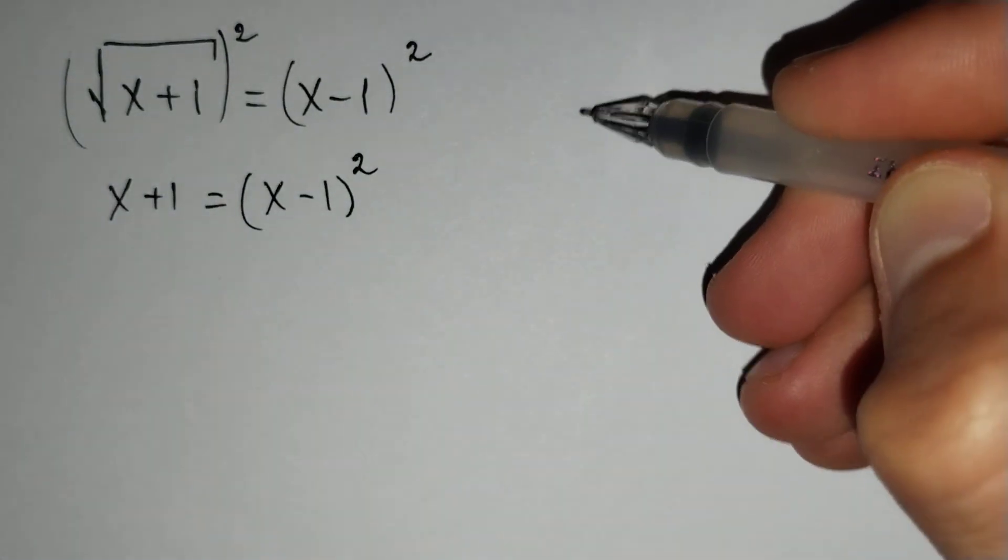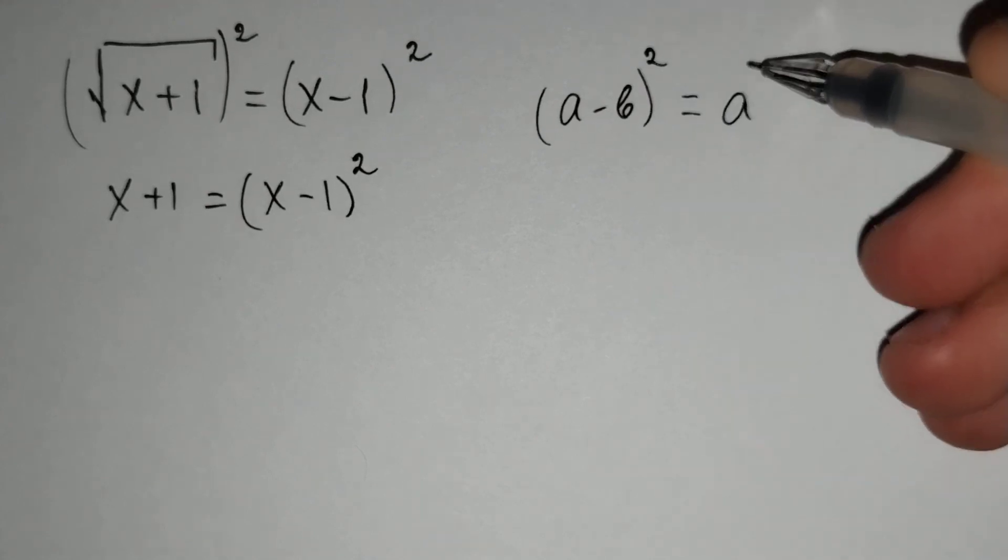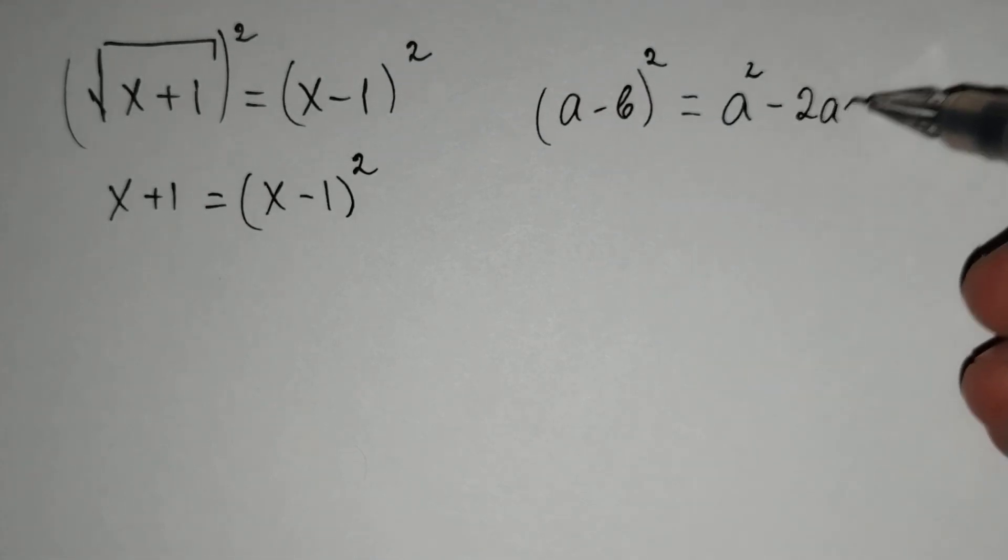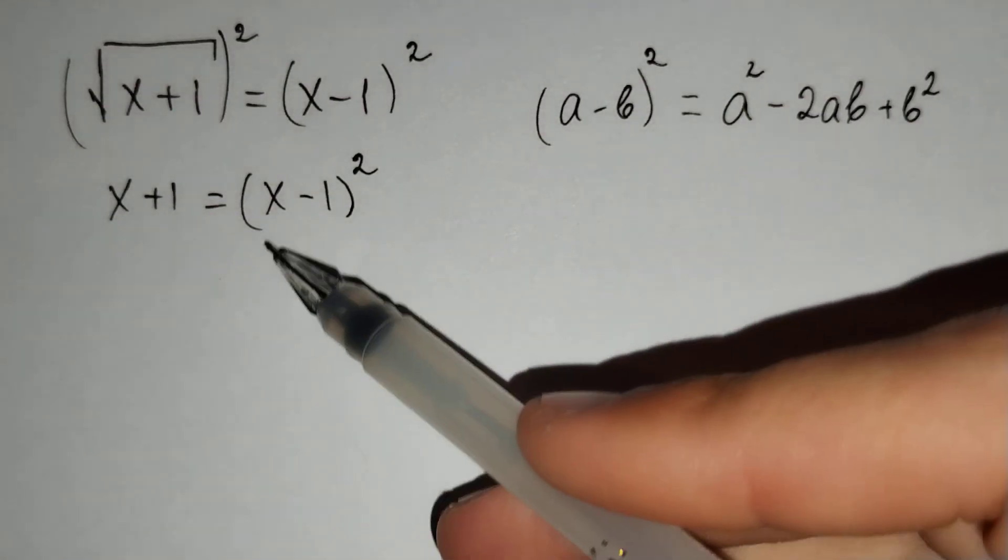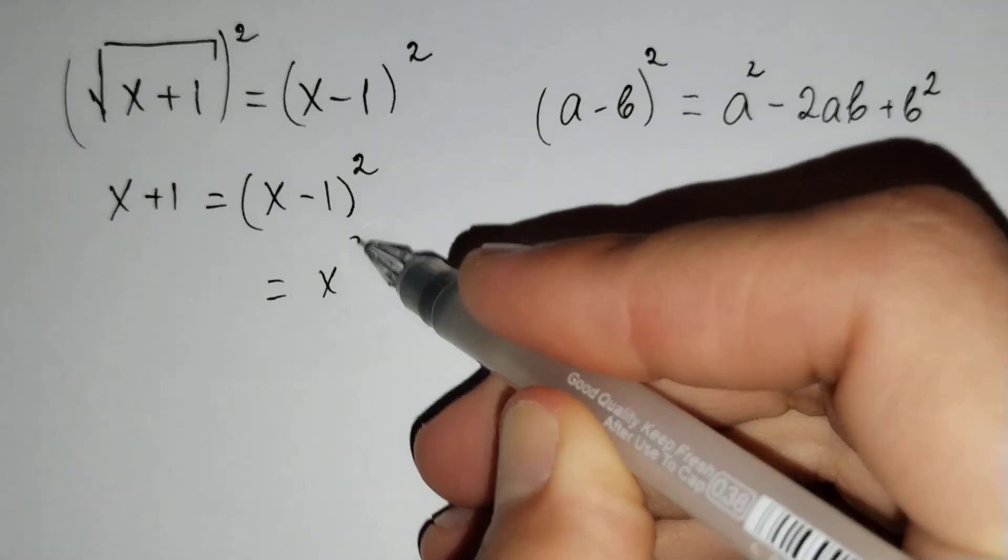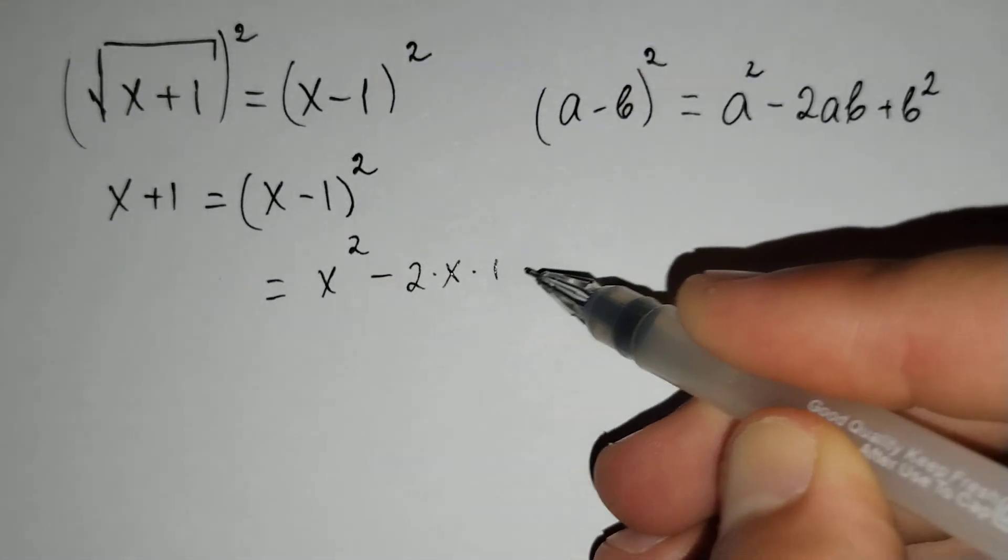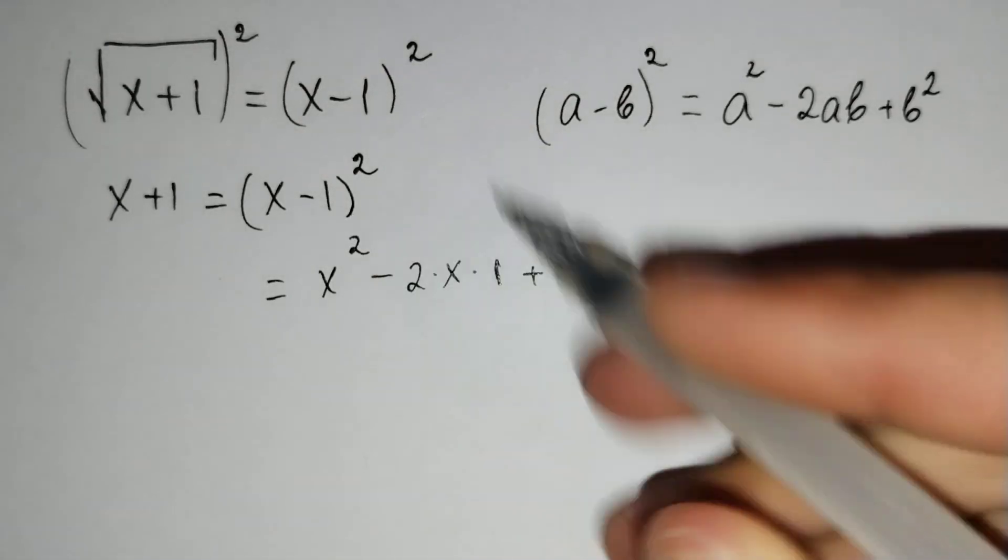We know that a minus b squared equals a squared minus 2ab plus b squared. For this formula, x minus 1 squared equals x squared minus 2 times x times 1 plus b squared.